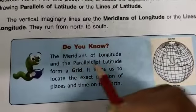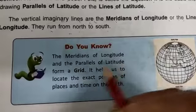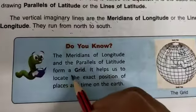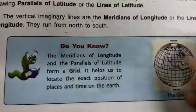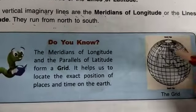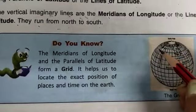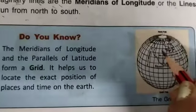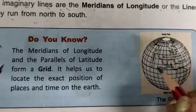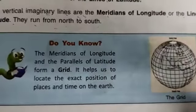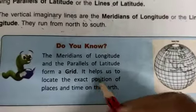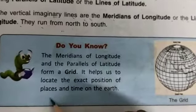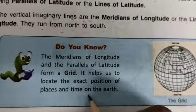The meridians of longitude and the parallels of latitude together form what is called the grid. This grid helps us to locate the exact position of a place and time on the Earth.